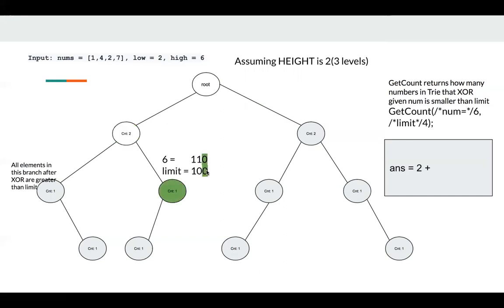So we just go to the right part. In this case, limit is also 0, and the bit of 6 is 0. Then same as before, we just go to the left part.